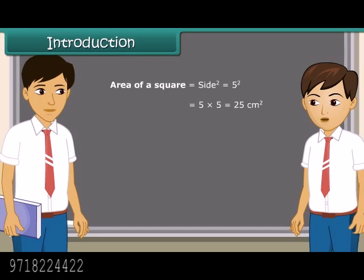Now I understand. Let me tell you something. There also exists a square root, which is just the inverse of a square. This sounds very interesting. I want to know more.